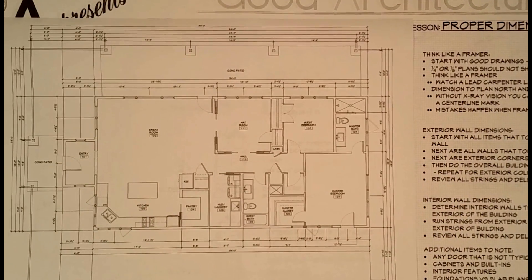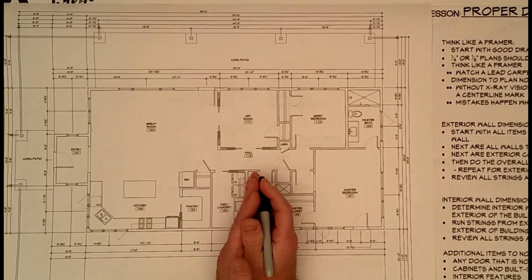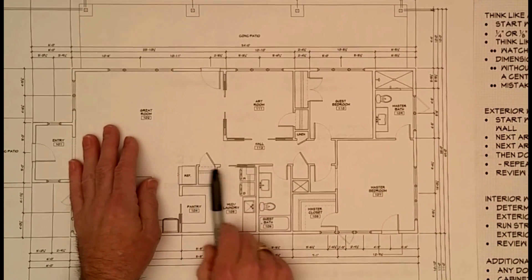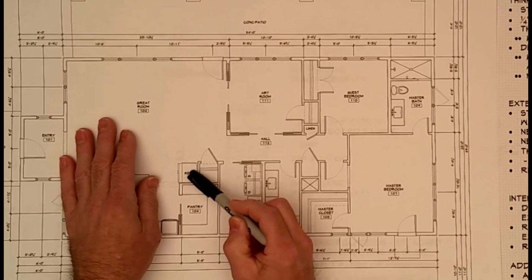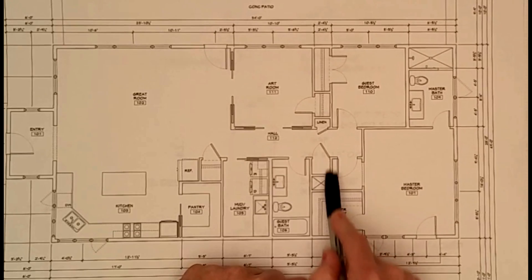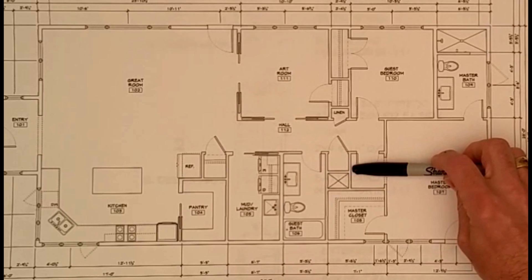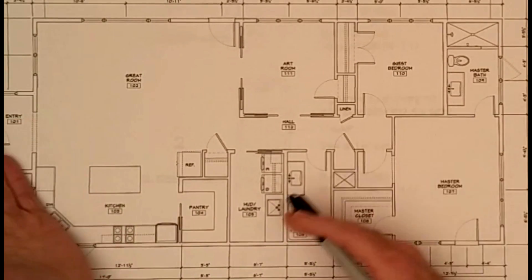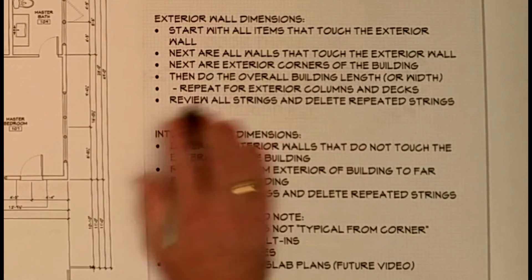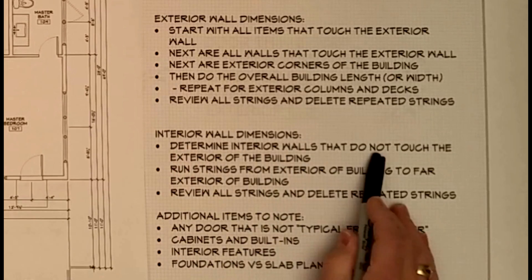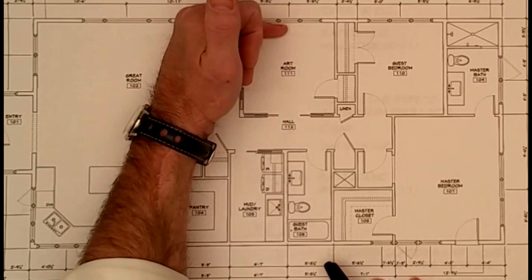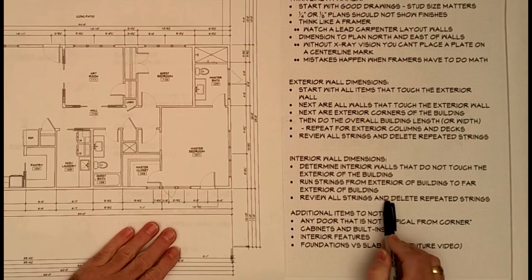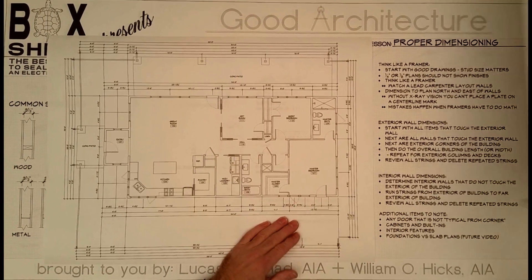Once you've done all that, start working on interior walls. Remember, interior walls often touch an exterior wall, so you may not necessarily need to re-dimension those. However, we're missing where certain walls are in relation to each other, and where plan east-west walls sit in relationship to the exterior walls — those are the things I will dimension on the interior of the plan. Determine which interior walls do not touch the exterior of the building, run strings from one side to the other as a control so they can add up and verify, then review all strings and delete any repeated ones.